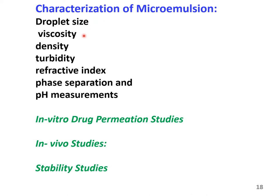Measurement of viscosity is done using a Brookfield-type rotary viscometer and the viscosity is measured at 37 degrees centigrade. Similarly, density, turbidity, and refractive index can be measured by using conventional techniques. The next type of test that needs to be carried out is to understand the efficiency of the microemulsion in releasing the drug to the external environment, and this can be done by carrying out in vitro permeability studies and determining the partition coefficient of the drug.